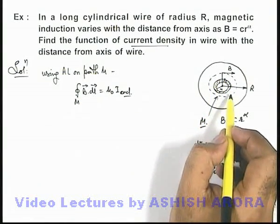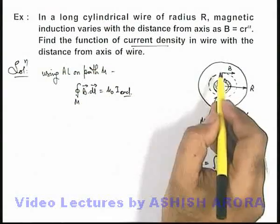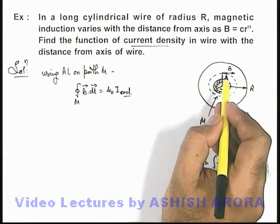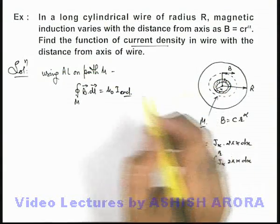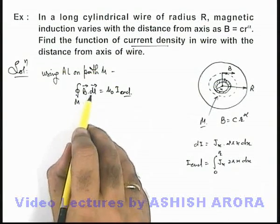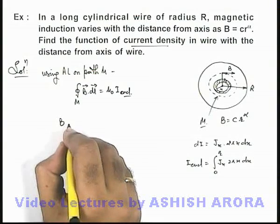So we can state in this situation, this dot product can be removed because the angle between the two is zero, so we can write it as B.